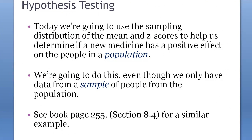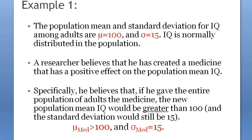This time I'm going to review hypothesis testing — the concept of hypothesis testing. Suppose we have a new medicine and we believe it has a positive effect on people in a population, but we can't test the entire population, so instead we're going to test on a sample. The population mean IQ among adults is mu = 100 and the population standard deviation sigma = 15.